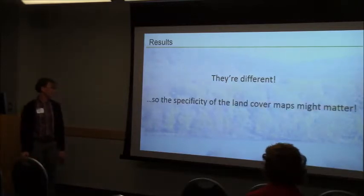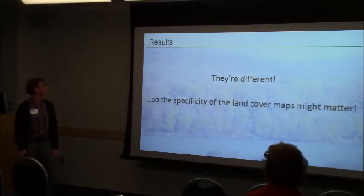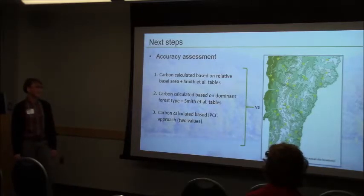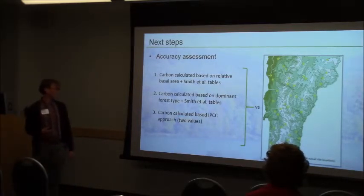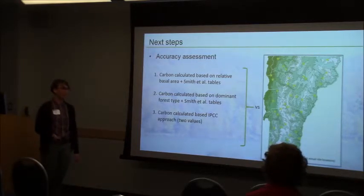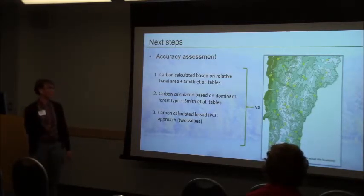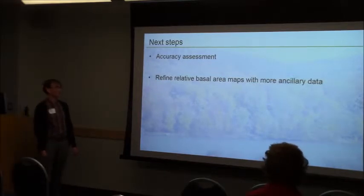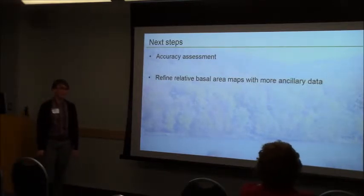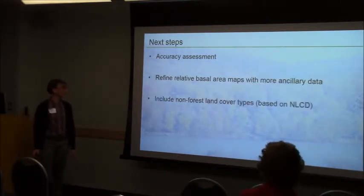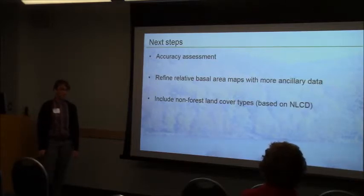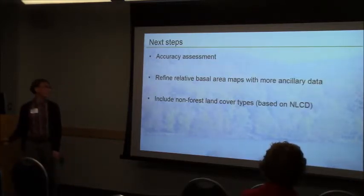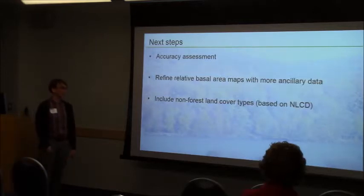So they're different, and the specificity of the maps might matter. What's next? I have to do an accuracy assessment to see which one is better. I'm going to take these three maps and compare them to plot information from BMC — not the actual sites, but approximately that many — to see which one accurately calculated carbon. David and Jen are also working on refining the relative basal area map. I'll also include non-forest land cover types based on NLCD in my carbon calculations.